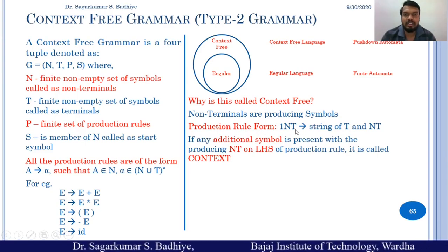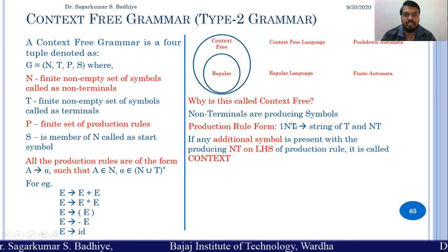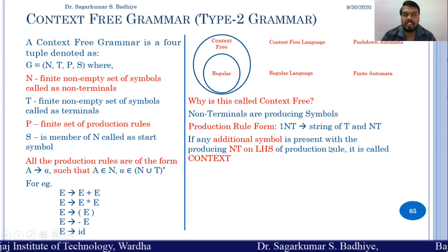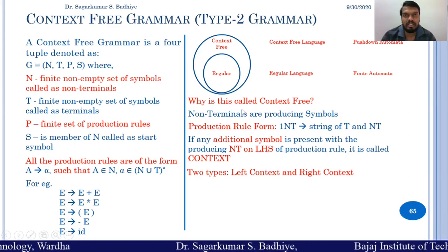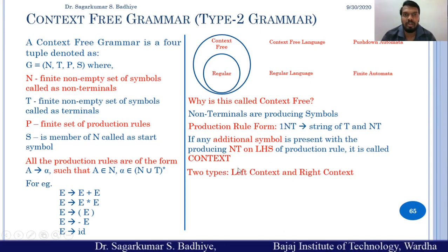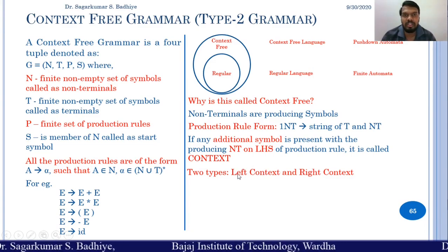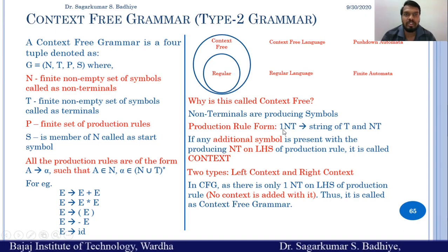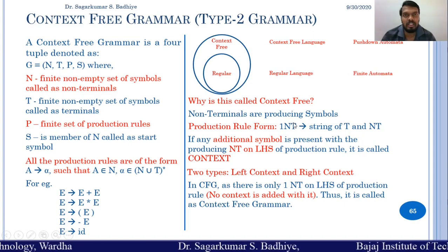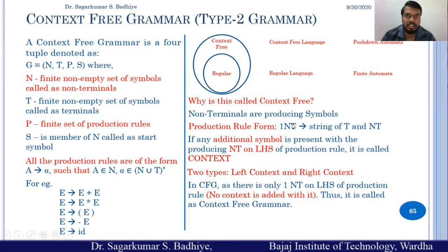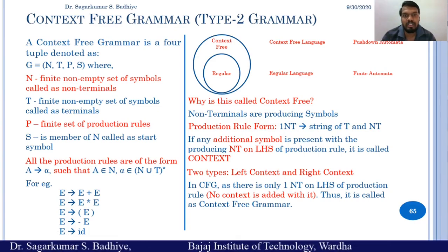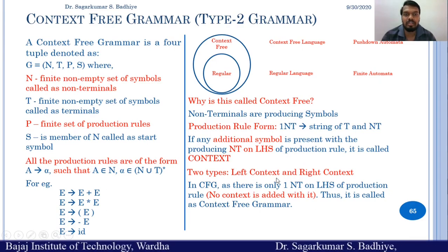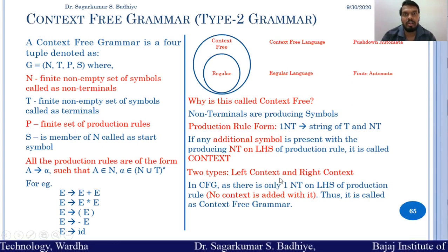If any additional symbol is present with the non-terminal on the left hand side of a production, those symbols are called the context. There are two types: left context, when symbols appear to the left of the non-terminal, and right context, when they appear to the right. In CFG, since the left hand side has only a single non-terminal, there are no additional symbols alongside it — therefore it is called context free grammar.